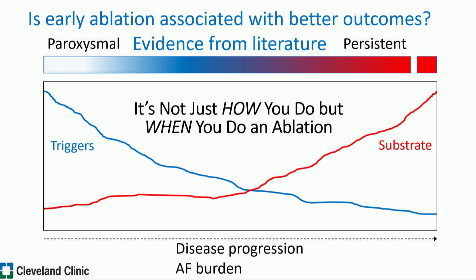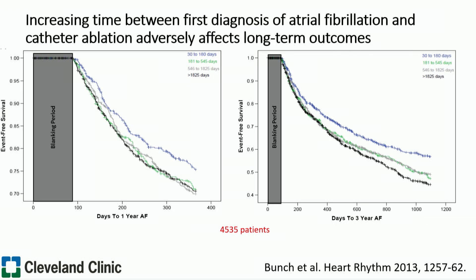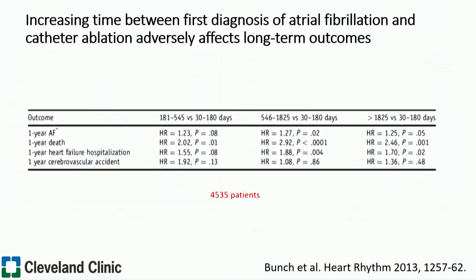Is early ablation associated with better outcomes? Data from Dr. Marouche's group back in 2009 showed that with more advanced remodeling and more scarring, there are worse clinical outcomes. A population of about 4,500 patients by Bunch and his group showed that early ablation was associated with better outcomes in AFib recurrence rates for both short- and long-term outcomes. Importantly, early ablation was also associated with better survival and less hospitalization for heart failure. It didn't have much effect on stroke risk, but overall showed less AFib, less heart failure, and less mortality.